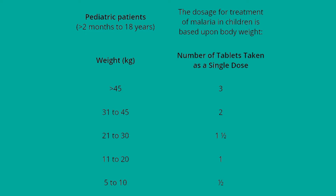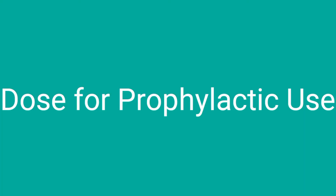If the weight is between 31 to 45 kg, we reduce the dose to two tablets. If it is between 21 to 30 kg, we give one and a half tablets. If the patient has a weight between 11 to 20 kg, then we give only one tablet. And if the weight is less than 10 kg, only half a tablet will be enough for the pediatric patient.